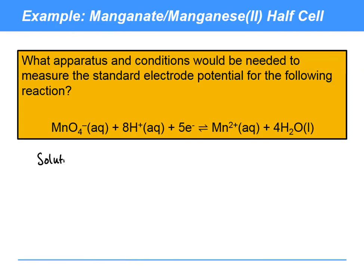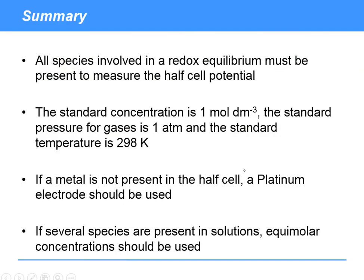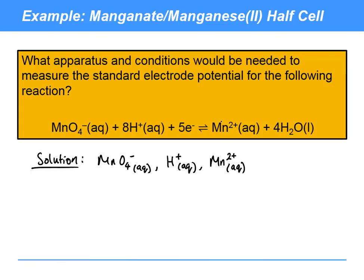So what are we going to need? First thing to see is that we've got aqueous solutions here, so we're going to have solutions. What are the aqueous substances we're going to have in our solutions? We need some manganate ions, MnO₄⁻, probably from something like potassium manganate. We're also going to need H⁺, maybe from hydrochloric acid or sulfuric acid. And we're going to need Mn²⁺, again perhaps a sulfate or a chloride. You want a highly soluble Mn²⁺ salt.